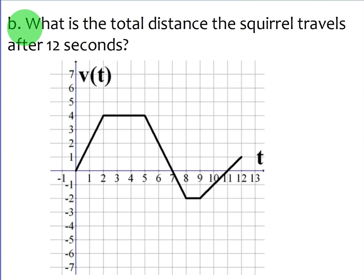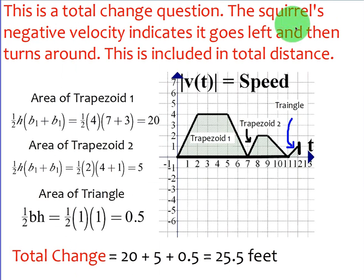Part B is what we're going to focus on. What is the total distance the squirrel travels after 12 seconds? So here, what we will do again when I think about total distance and what we should think of is taking anything that's below the t-axis or the x-axis, flipping it up, and finding its area. Conversely, or similarly, you can just find its area and then make it positive. It's the same concept.